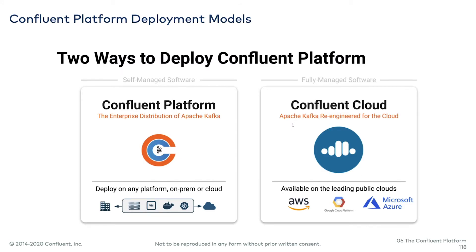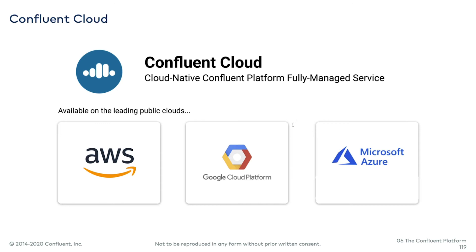Apart from all that talk of deploying the platform yourself, the other major way to get this done is Confluent Cloud. Confluent Cloud is a fully managed Kafka service with, at the time of this recording, many of the elements of Confluent Platform available as fully managed services. It's available on the main public clouds: Amazon, Google, and Azure. When you create a new cluster in Confluent Cloud, you identify the cloud provider you want to host that cluster, and everything is taken care of for you.